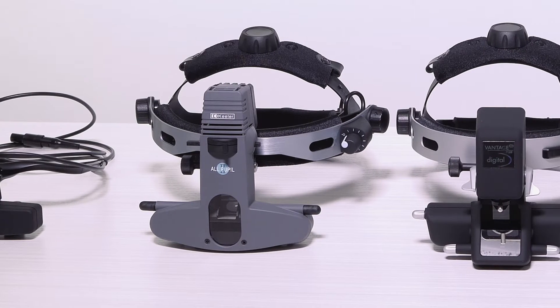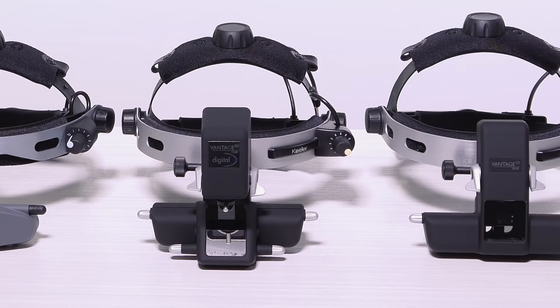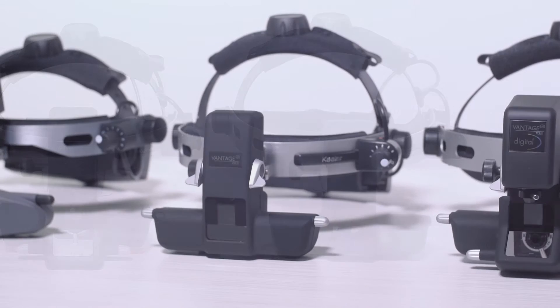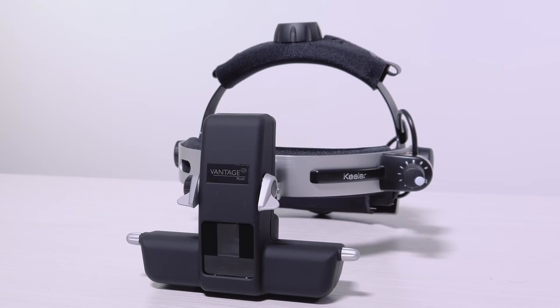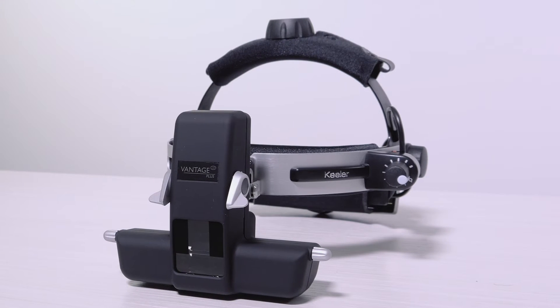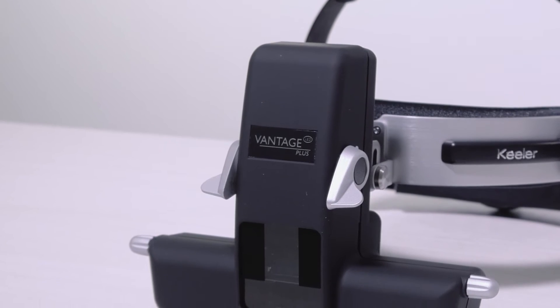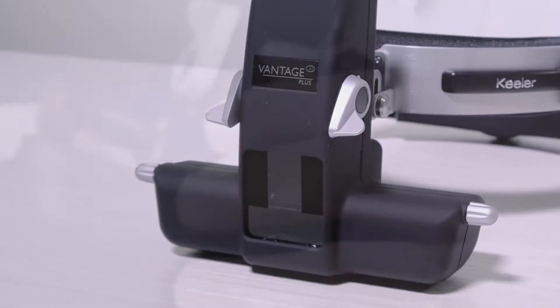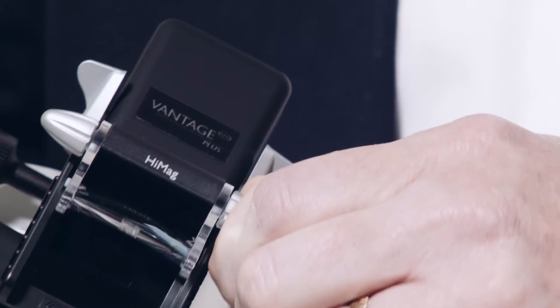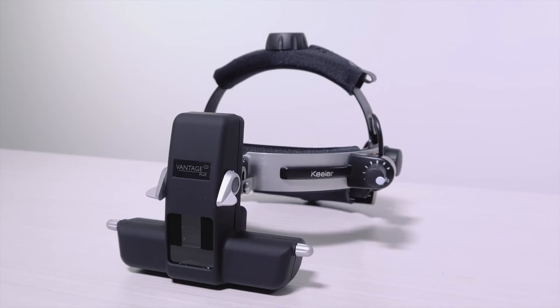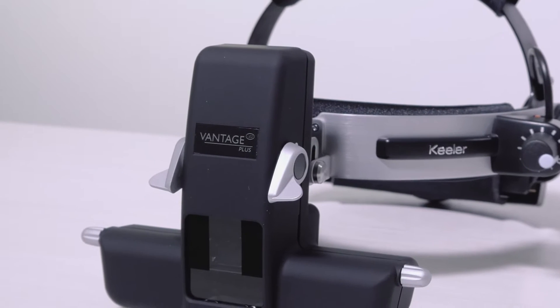The Keeler Binocular Indirect Ophthalmoscope line is known for comfort, reliability, and world-renowned Keeler optics. The Vantage Plus is Keeler's most advanced and lightweight BIO with intelligent optics, incorporating LED technology in wireless or wired formats. The patented HiMag lens provides 60% more magnification when in place. This video will provide an overview of the Vantage Plus features and a guide on how to use it.